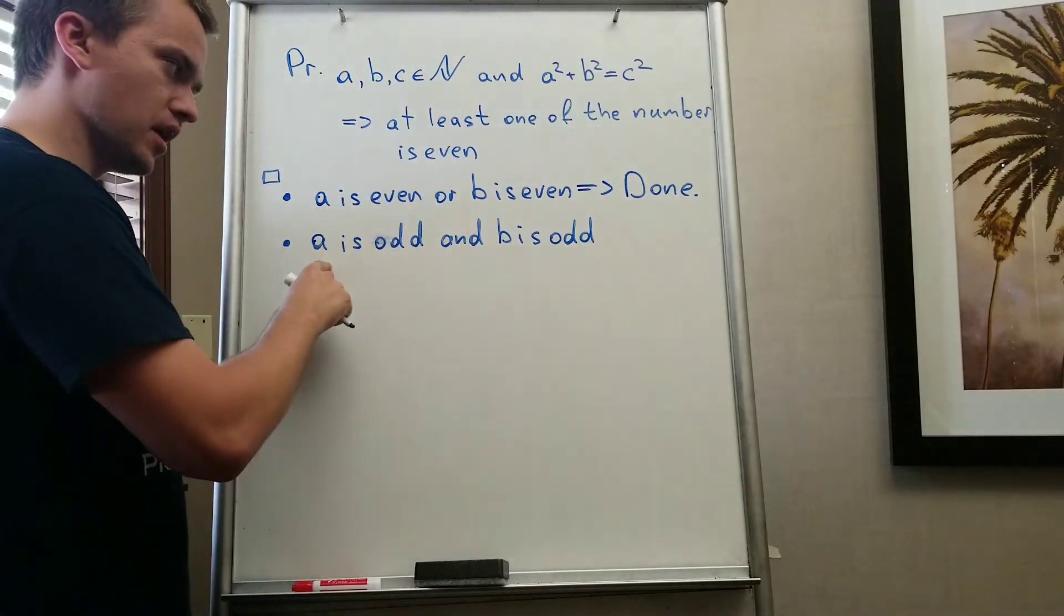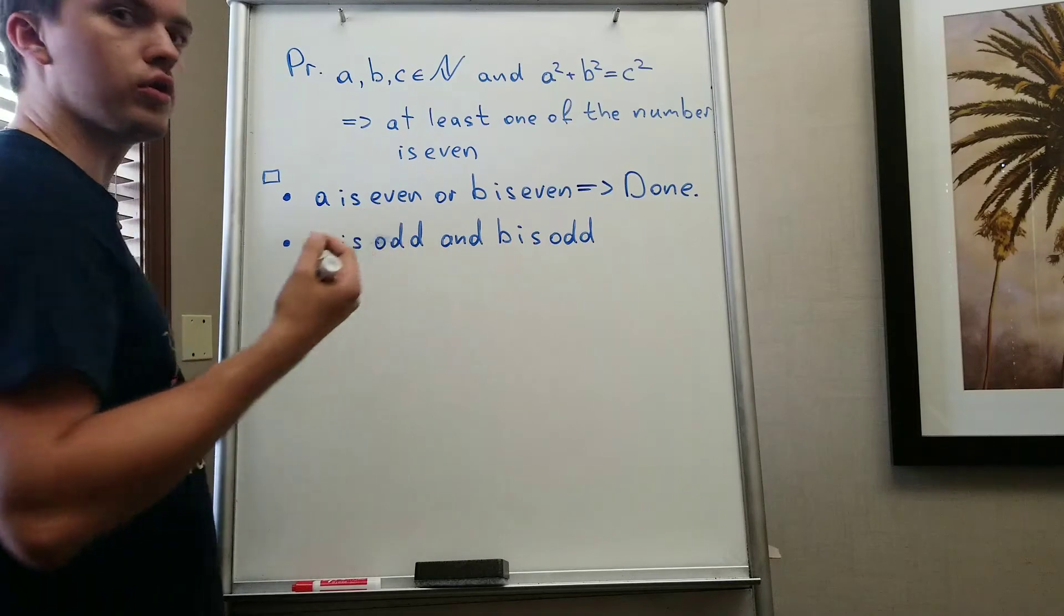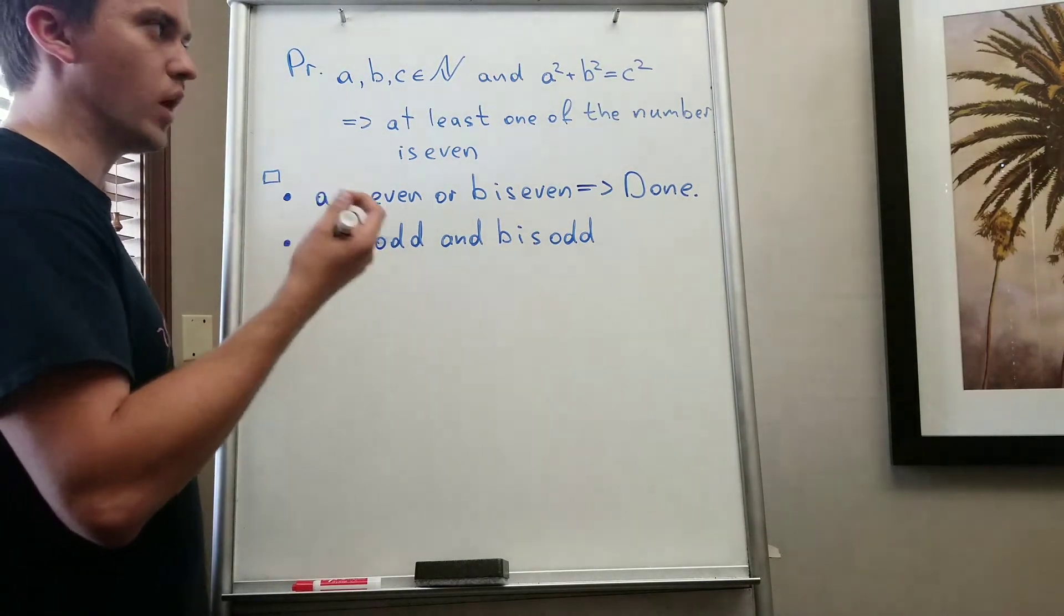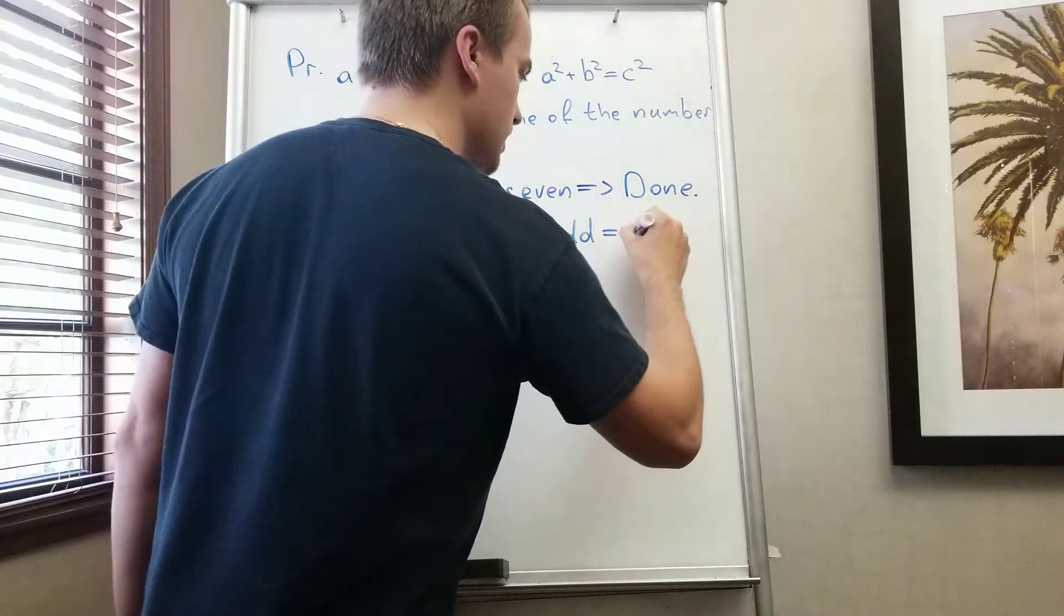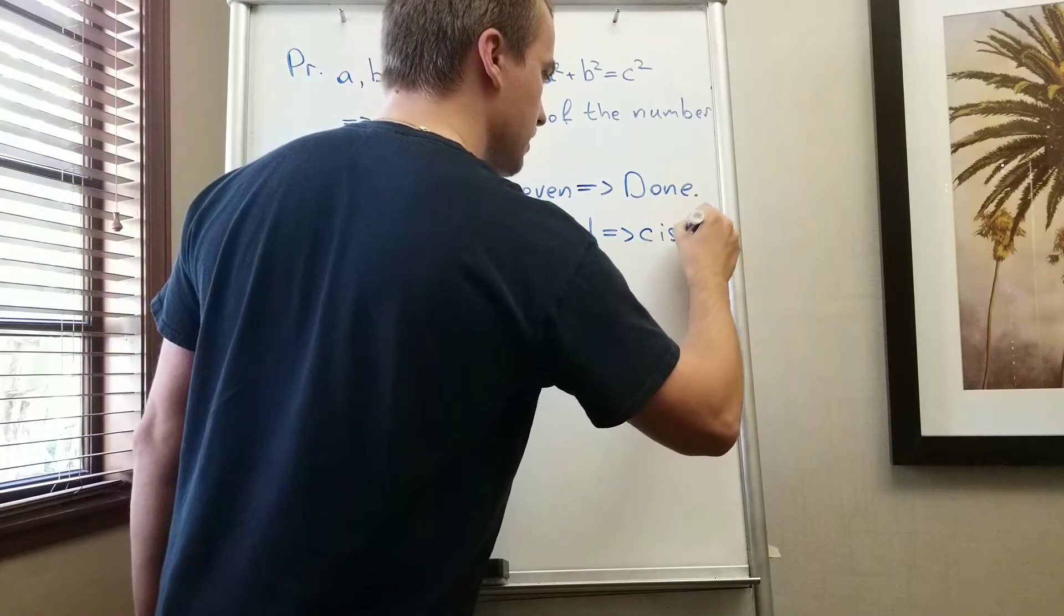b is odd. A is odd and b is odd. Our goal is to show that there exists at least one even. We want to show that c is even.